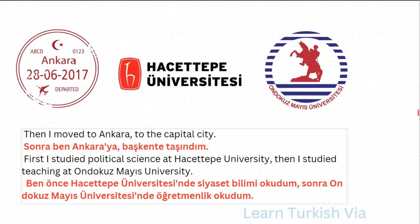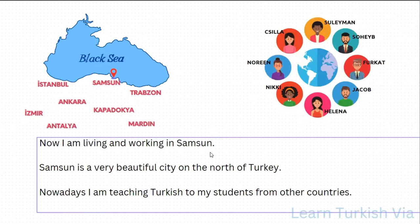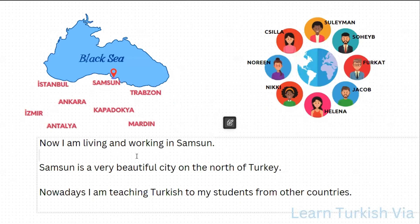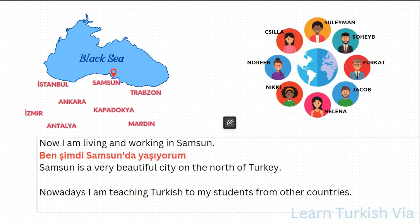Let's continue with the next page. In the first sentence, it says: Now I'm living and working in Samsun. Let's translate: I — ben, now — şimdi. In Samsun — Samsun'da. Live — yaşa, living — yaşıyor, I'm living — yaşıyorum. And — ve. Work — çalış, working — çalışıyor, I am working — çalışıyorum. So: Ben şimdi Samsun'da yaşıyorum ve çalışıyorum.